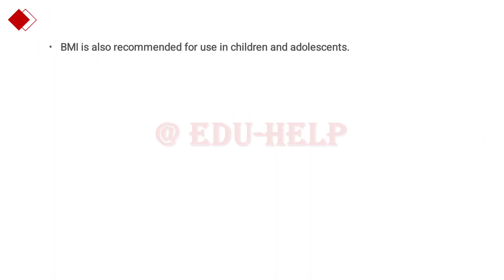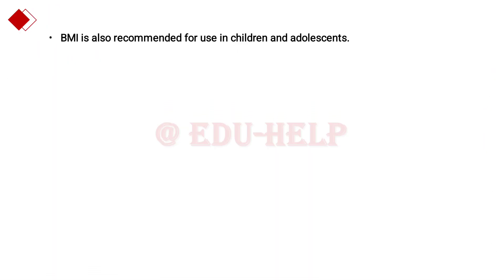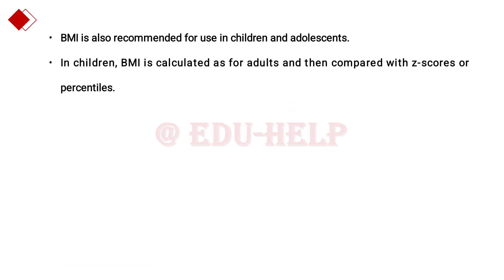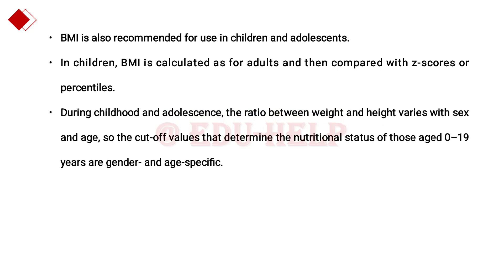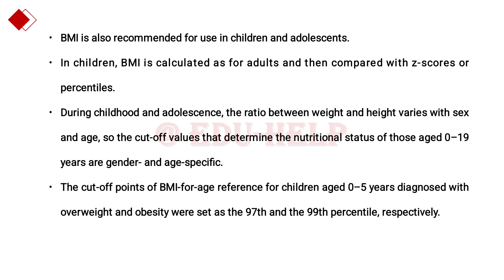BMI is also recommended for use in children and adolescents. In children, it is calculated the same way as in adults and then compared with the Z-score or percentile. During childhood and adolescence, the ratio between weight and height varies with sex and age, so the cutoff values which determine nutritional status are gender and age specific. The cutoff for BMI-for-age for children aged 0 to 5 years: